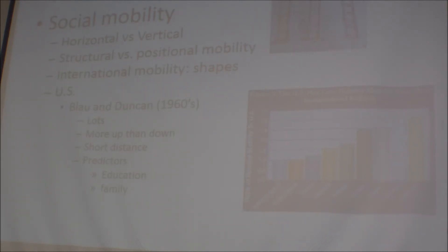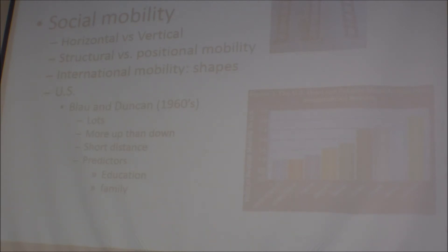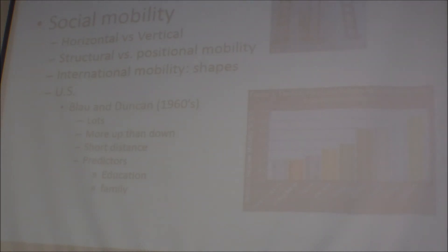Structural versus positional mobility: positional mobility involves individual factors like education, intelligence, physical attractiveness, and health. Structural mobility depends on the structure of the economy and jobs available. We looked at figures like a fuzzy cherry, pancake, and diamond stripe representing occupational structures of different societies. The Blau and Duncan study found in the 1960s most mobility was upward but short-distance. Best predictors were education and family background. Since then, more mobility is downward.